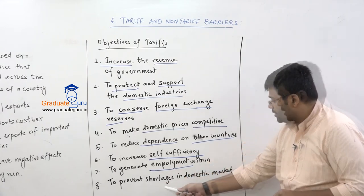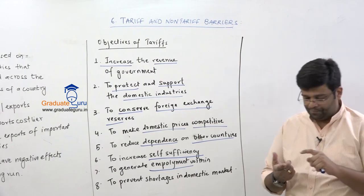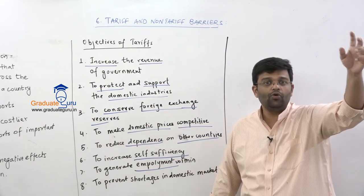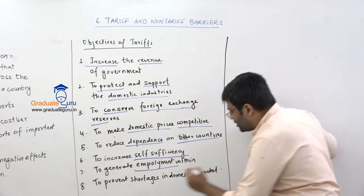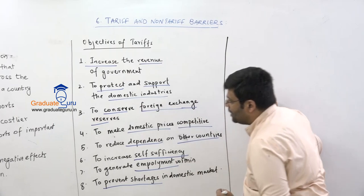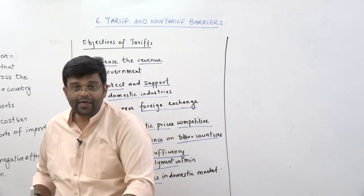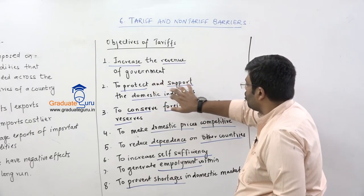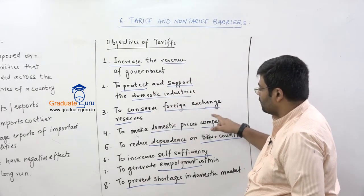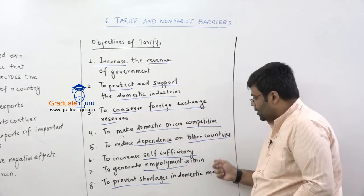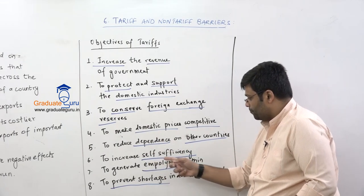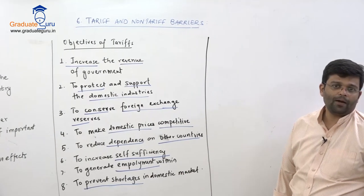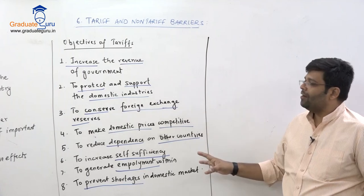Tariffs ultimately prevent shortages in the domestic market. By taxing exports, you discourage exporters from selling abroad, so goods stay in the domestic market. The objectives of tariff imposition are: to protect domestic industries, increase government revenue, conserve foreign exchange, make domestic prices competitive, reduce dependence on other countries, increase self-sufficiency, generate employment, and prevent domestic shortages.